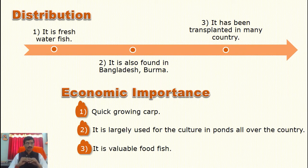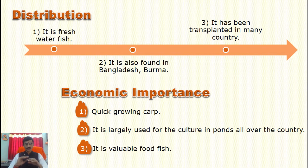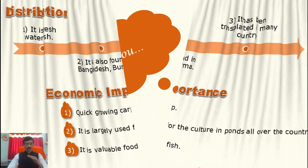The economic importance of Labeo: it is a quickly growing carp, which is beneficial for fishermen who culture it. It is widely used for culture in ponds all over the country. It is a valuable food fish, with Vitamin A and Vitamin D present. It also helps solve the unemployment problem, as fishermen can culture Labeo as a livelihood.